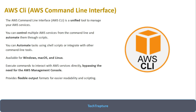That was the conceptual part. Now let's see how to work with the CLI and how to install it. First I will show you that CLI is already installed in your AWS console — you just open the AWS CloudShell and I will show you how we can start using AWS CLI without installing it locally.